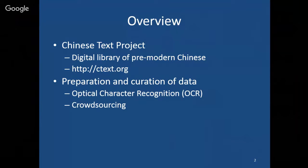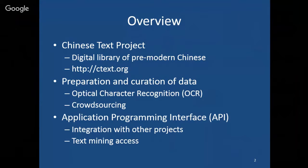I'm going to introduce a little bit about the project itself and give some examples, and then mainly focus on the preparation and curation of data. This is going to involve optical character recognition for Chinese texts and crowdsourcing for maintaining this body of data. Lastly, I'll talk about an application programming interface or API, to allow integration between this project and other projects, and for data mining access for digital humanities and big data studies.